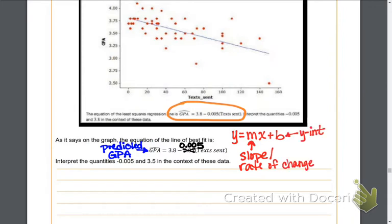So looking back at my equation, I need to figure out which one, the 3.8 or the negative 0.005, which one of those is the slope, which one of those is the y-intercept. Well, I have a couple things to help me out. The first thing is I can see the graph with this line of best fit, and I see it has a negative slope.